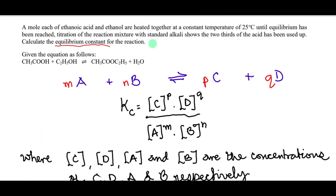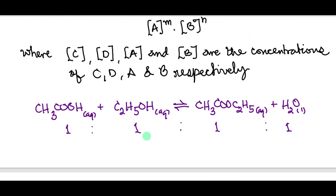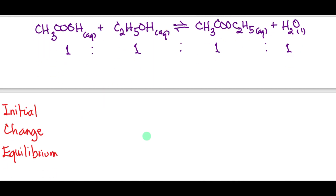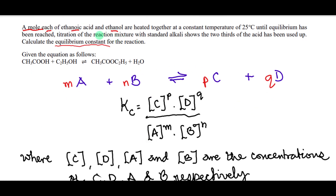From the question, one mole each of ethanoic acid and ethanol are heated together at this temperature until equilibrium was reached. Titration of the mixture with standard alkali shows that two-thirds of the acid was used up. This means the initial concentration — since we are not given concentration but number of moles — we use moles directly.